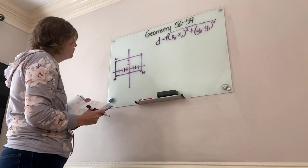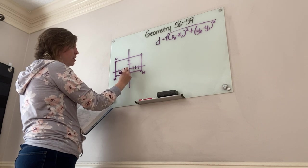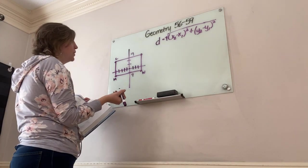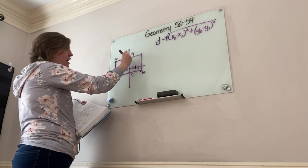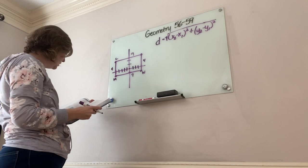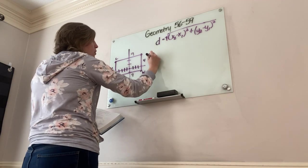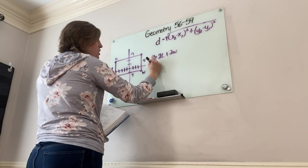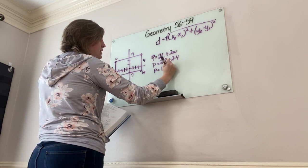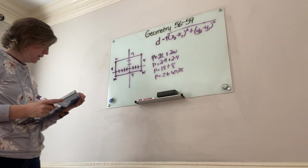Don't forget to count the origin when counting. The horizontal distance is 9, and since it's a rectangle the opposite side is also 9. The vertical distance is 4. Using the rectangle perimeter formula: P = 2L + 2W = 2(9) + 2(4) = 18 + 8 = 26 units. Since it's perimeter, not area, the answer is units — not units squared.